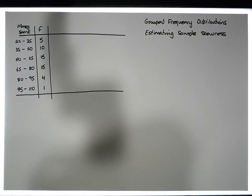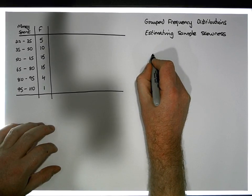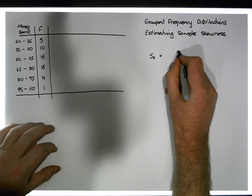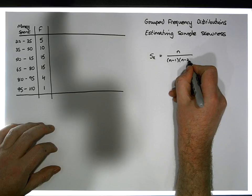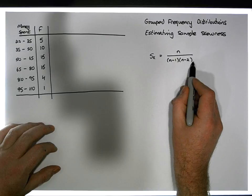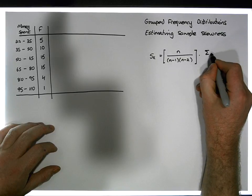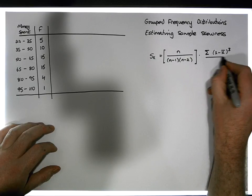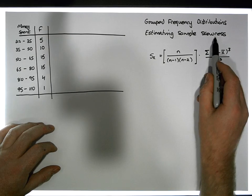There's a formula we can use to estimate sample skewness. It looks quite complicated but it's actually straightforward. Sk equals n — the sample size — divided by (n−1)(n−2), times the sum of (x minus the sample mean) cubed, divided by the cube of the standard deviation s³.